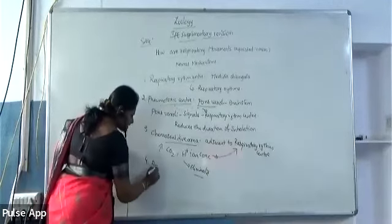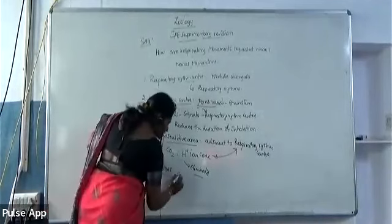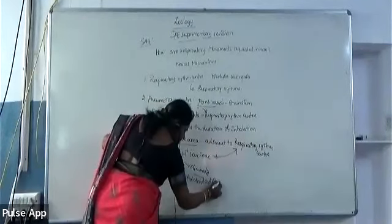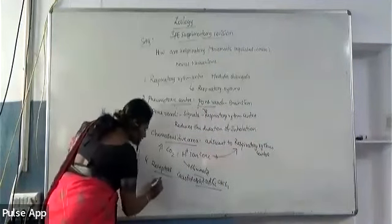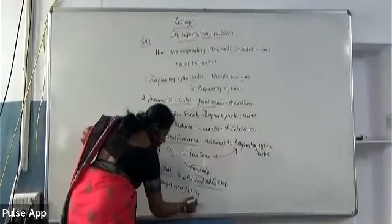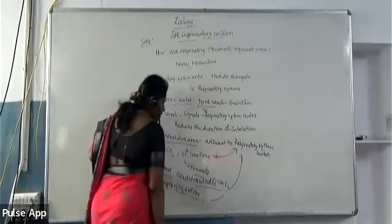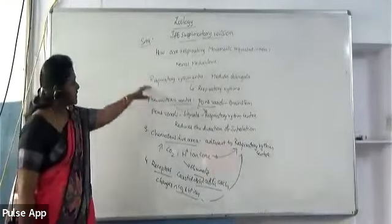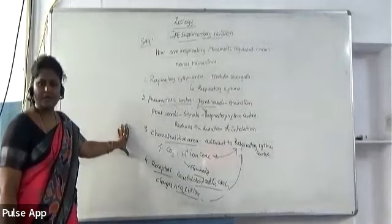The fourth regulatory component involves chemoreceptors present in the carotid arch and aortic arch. These receptors also detect changes in CO2 and H+ ion concentration, and send signals accordingly to modify the rate of respiratory rhythm. Together, these four centers and receptors regulate respiratory movements in man.